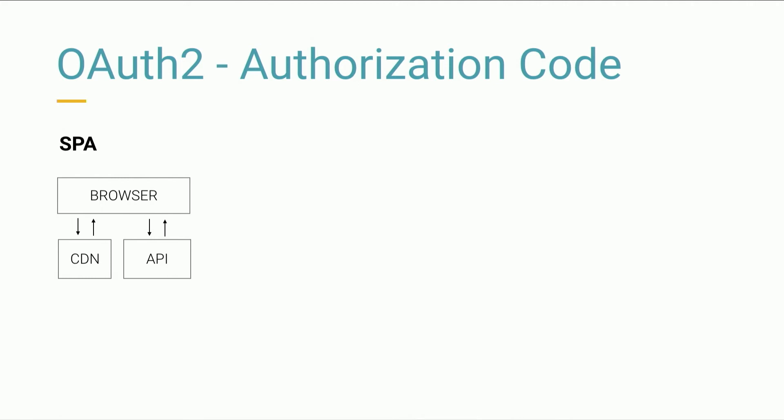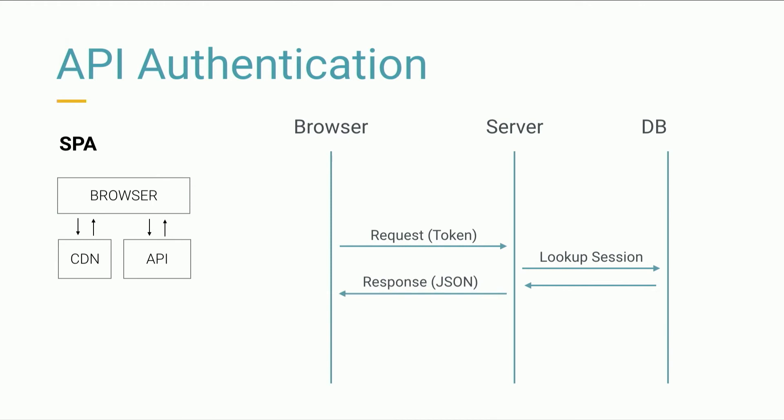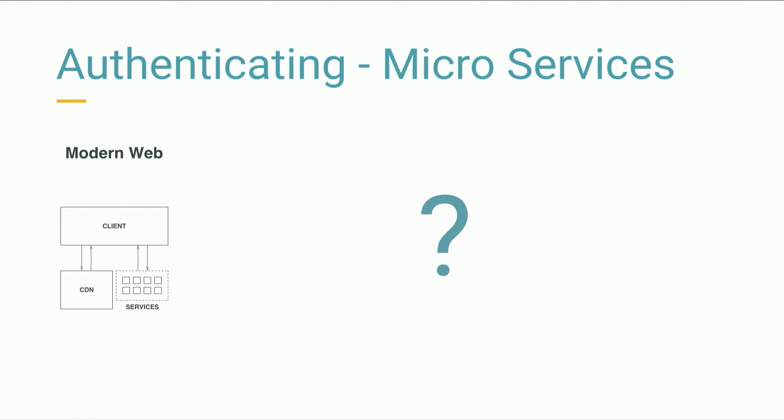With the single-page app approach, the final flow ends up resembling the typical monolithic app — you get a magical access token, request something from a server, it looks up the session in the database, and responds with JSON instead of HTML. But what happens in the modern JAMstack approach, where you have a hybrid of content talking to all these different microservices? How do we make sure they all understand who the user is without asking them to authenticate with every service separately?